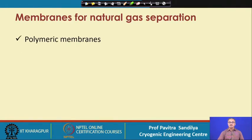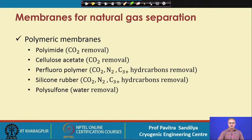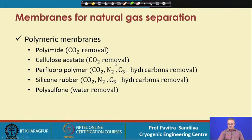For natural gas separation, we use polymeric membranes. Some examples include polyimide for carbon dioxide removal, cellulose acetate, perfluoropolymer, silicone rubber, and polysulfone. The various applications of these membranes in natural gas processing are shown here.